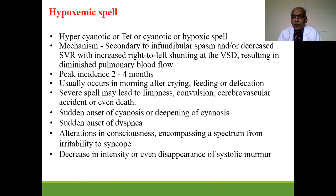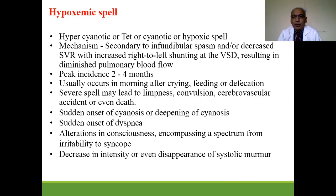Hypoxic spells, also known as hypercyanotic or cyanotic spells, occur in tetralogy of Fallot. The mechanism is secondary to infundibular spasm and/or decreased systemic venous return with increased right-to-left shunting at the VSD, resulting in decreased pulmonary blood flow. The incidence is common at 2–4 months of age; spells usually occur after crying, feeding, or defecation, and lead to limpness, convulsions, and cerebral vascular accidents.